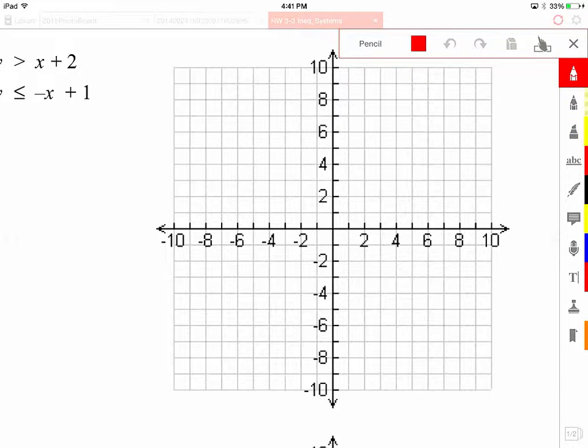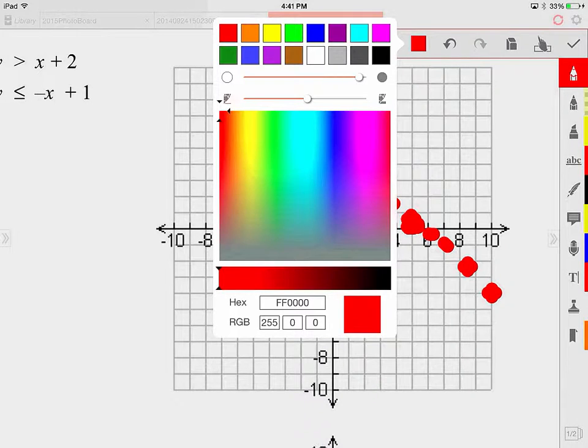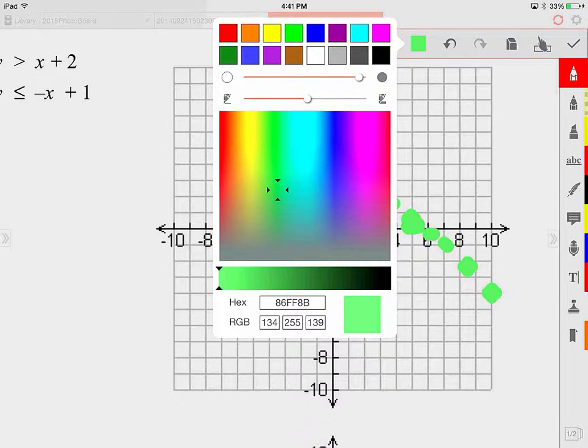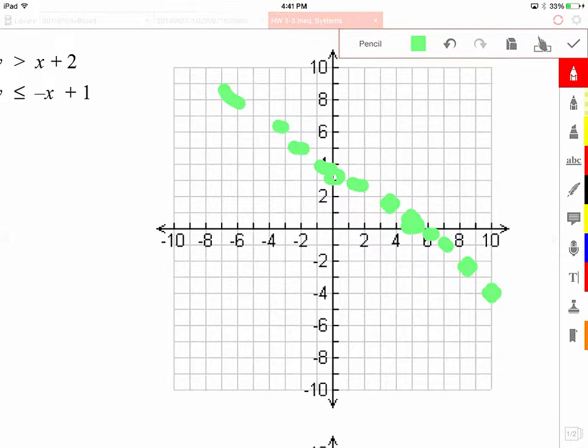So let's say I want to use a pencil in red. And now I can put my points where I want them to be. I can graph dotted lines if I want. I can actually shade in a different color. If I hit the color, I can shade. Let's say I want to shade in a light green. And I shade.